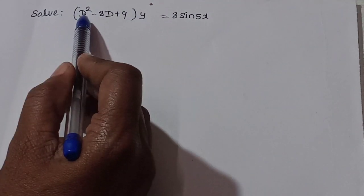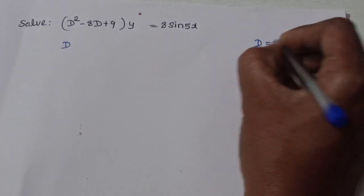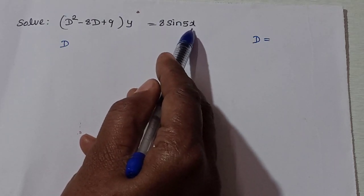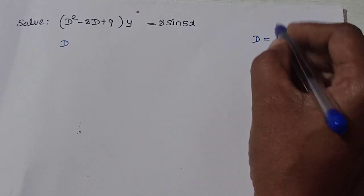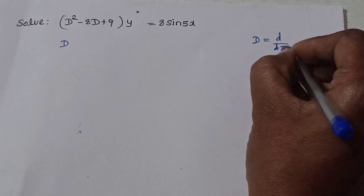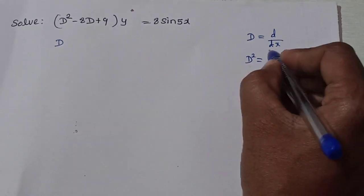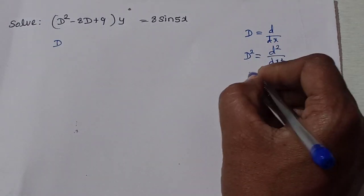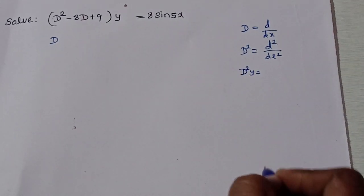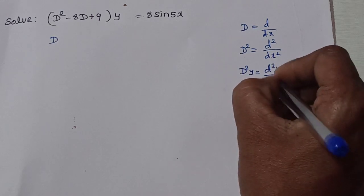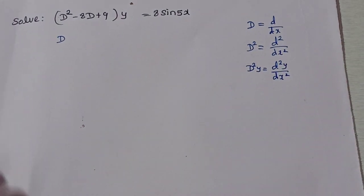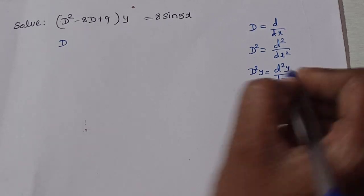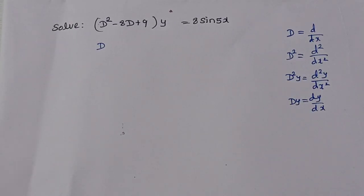D squared is a differential operator. D means d by dx, where x is the independent variable. D squared is a second order differential operator, meaning d squared by dx squared. So D squared Y equals d²y/dx², the second order differential coefficient, and D Y equals dy/dx, the first order differential coefficient.